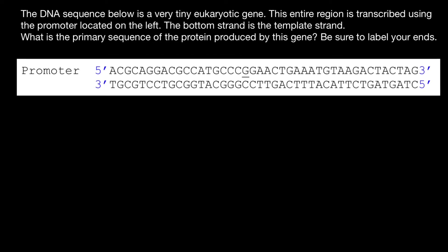Hello, and welcome to Nikolai's genetics lessons. Today's problem is: the DNA sequence below is a very tiny eukaryotic gene. This entire region is transcribed using the promoter located on the left. The bottom strand is the template strand. What is the primary sequence of the protein produced by this gene? Be sure to label your ends.